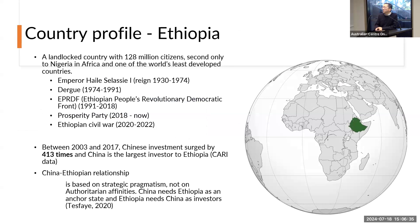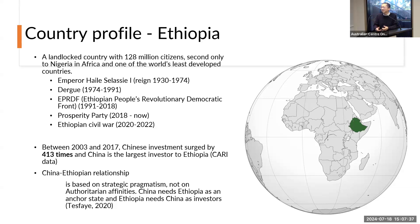I picked Ethiopia as my research site. It's a landlocked country with a huge population, second only to Nigeria in Africa, and has undergone several regime changes since the 1930s. Between 2003 and 2017, Chinese investment in Ethiopia surged by more than 400 times, and China is now the largest investor there. Their relationship is characterized by strategic pragmatism — not strong ideological solidarity, but mutual need: China needs Ethiopia as an anchor state, and Ethiopia needs China as an investor.